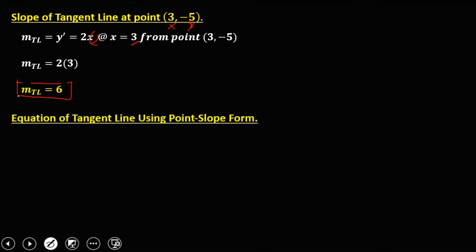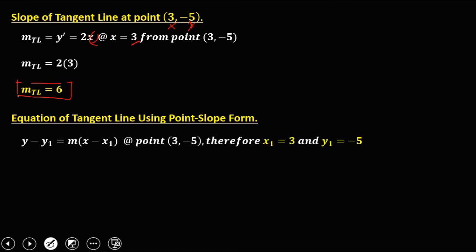To solve for the equation of the tangent line, use the point-slope form: y minus y-sub-1 equals m times x minus x-sub-1. From the point (3, negative 5), x-sub-1 is 3 and y-sub-1 is negative 5. Substitute these values into the formula. So we have y minus negative 5 equals 6 times x minus 3.